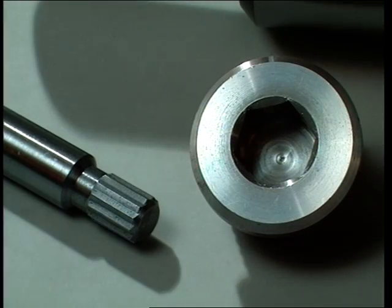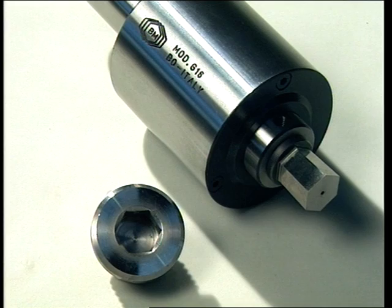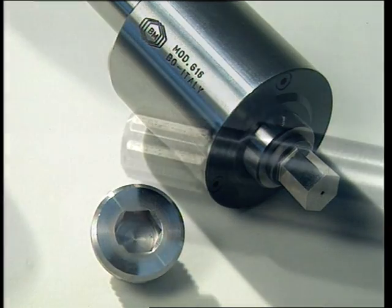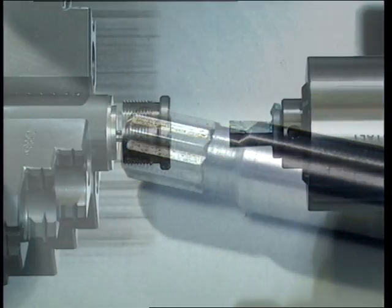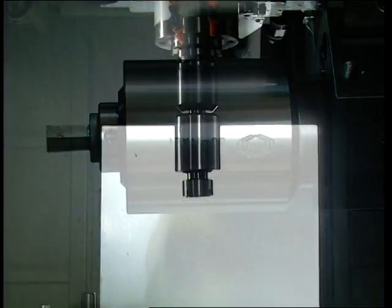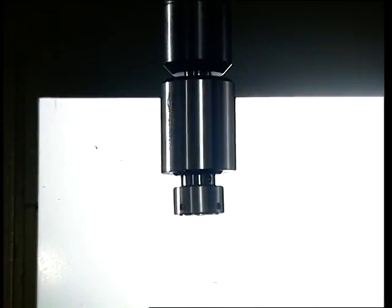Naturally, either of the two operations, meaning a polygonal shape in a blind or through hole, or an external polygonal shape, can be carried out by switching the machine tools as required.